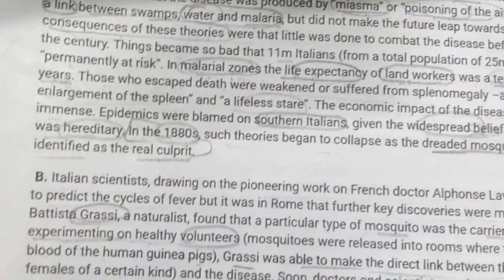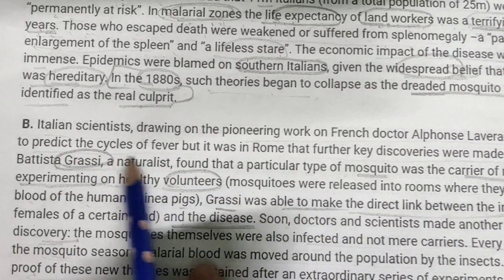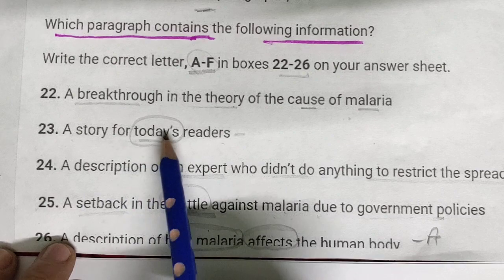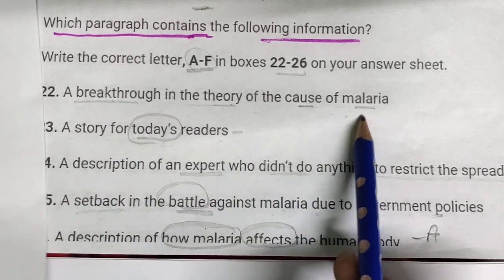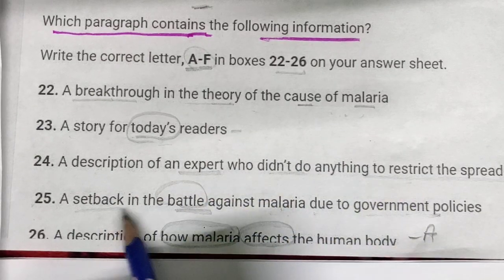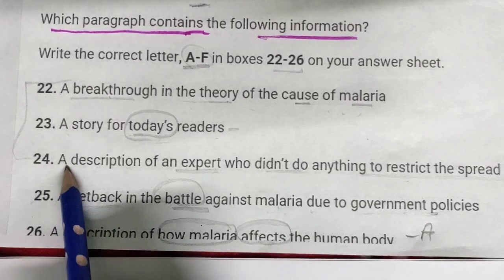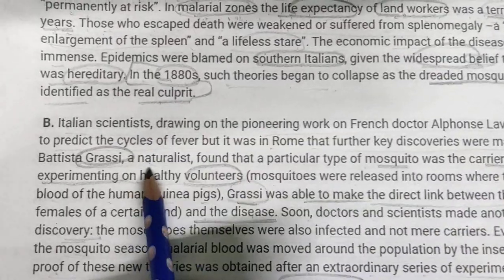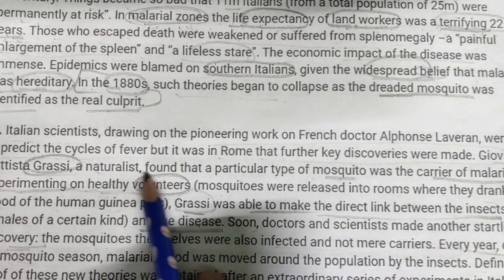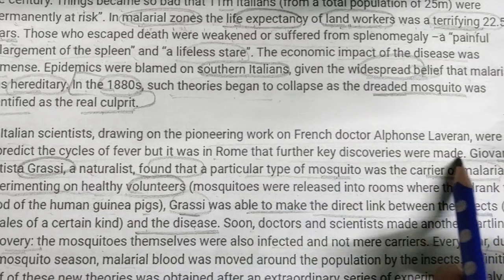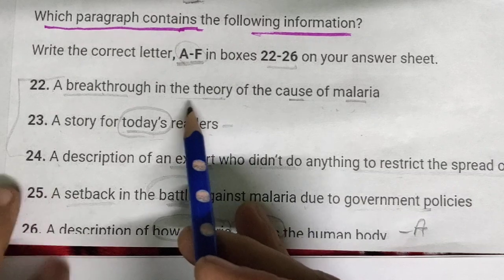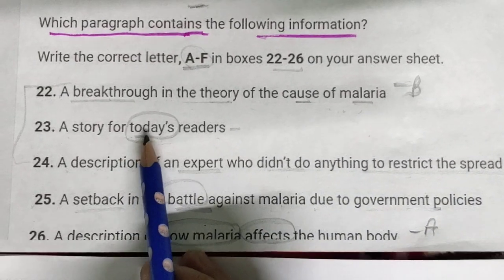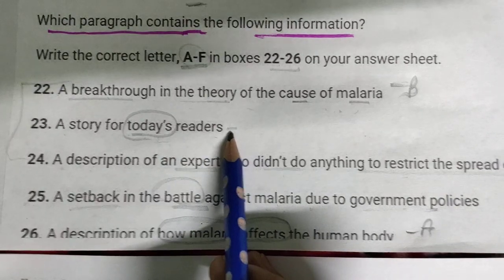For paragraph B — a naturalist found that a particular type of mosquito was the carrier of malaria. This represents a breakthrough in the theory of the cause of malaria. So for question 22, 'a breakthrough in the theory of the cause of malaria,' the answer is paragraph B.